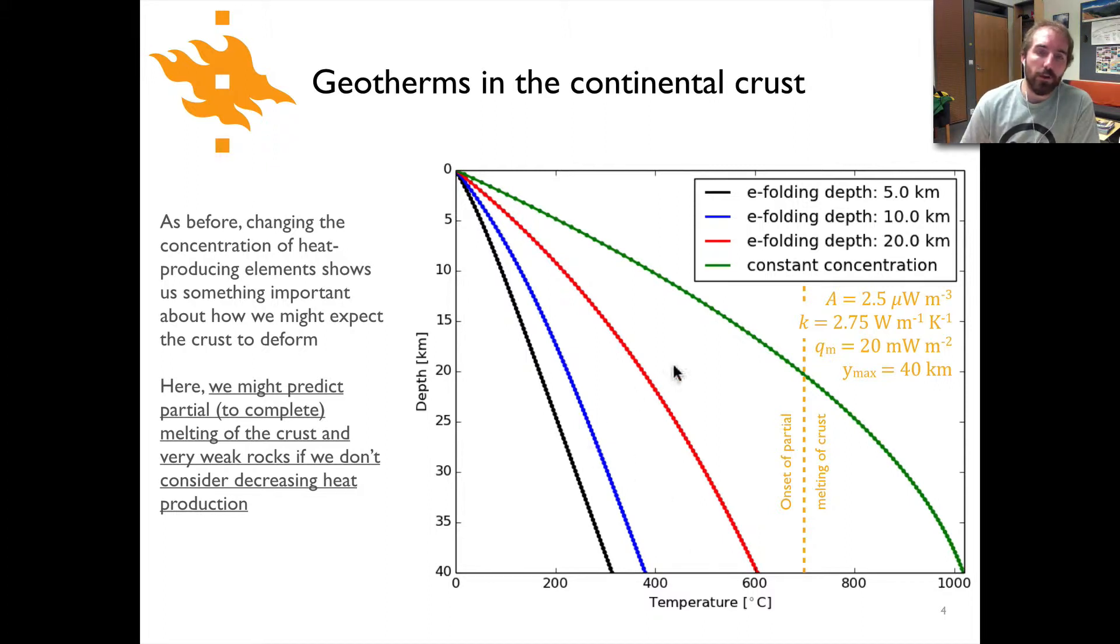We have here four different geotherms—remember these are predictions of temperature as a function of depth. In the cases we've looked at up to this point we've assumed a constant concentration of heat producing elements, in this case 2.5 microwatts per cubic meter, something like an upper crustal rock type. We've assumed that here in the green line for the whole thickness of this 40 kilometer thick crust.